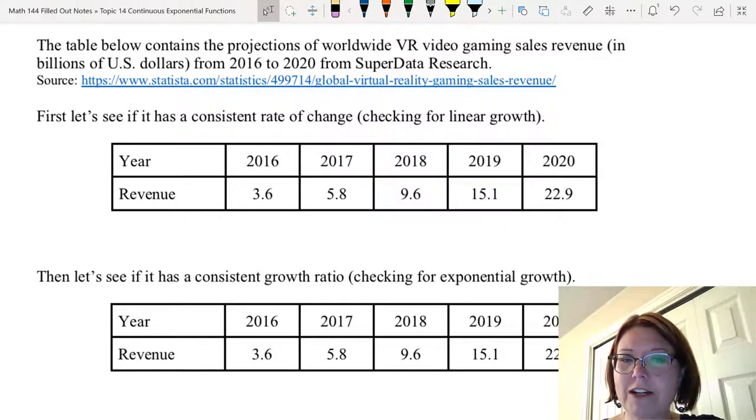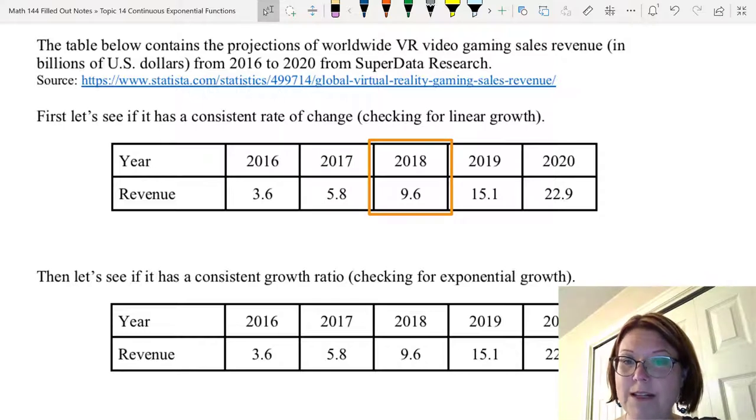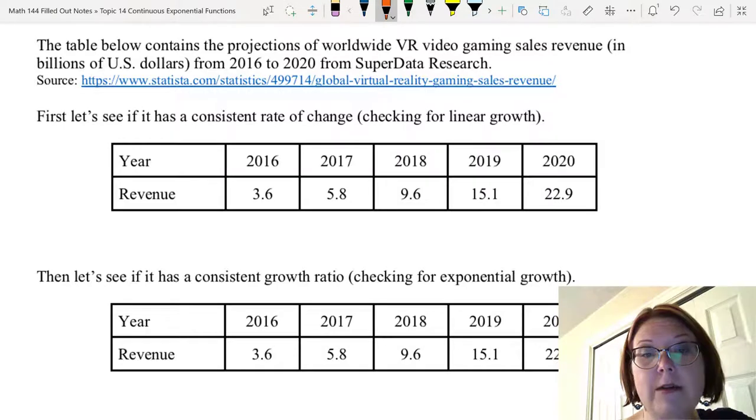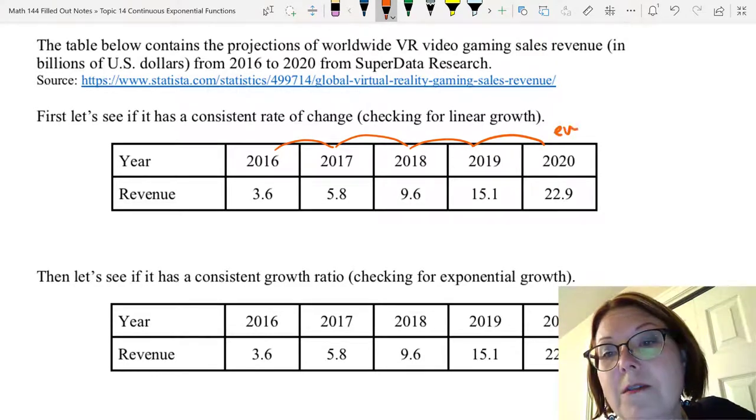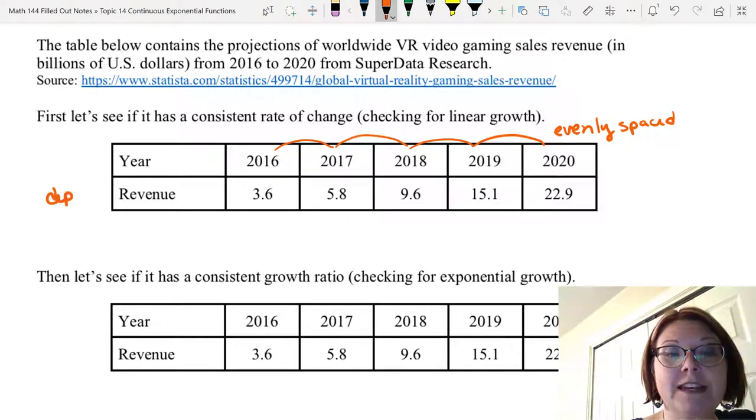Our table has two rows, the year and the revenue. I'm going to read you the pairs. 2016 has a revenue of 3.6 billion US dollars. 2017 has a revenue of 5.8, 2018 a revenue of 9.6, 2019 a revenue of 15.1, and 2020 a revenue of 22.9 billion US dollars. So the first thing we should notice is whether the data is evenly spaced. And by that I mean are we counting up by the same amount each time. And we do see here that we have evenly spaced data. That's really nice because it makes our rate of change calculations really easy.